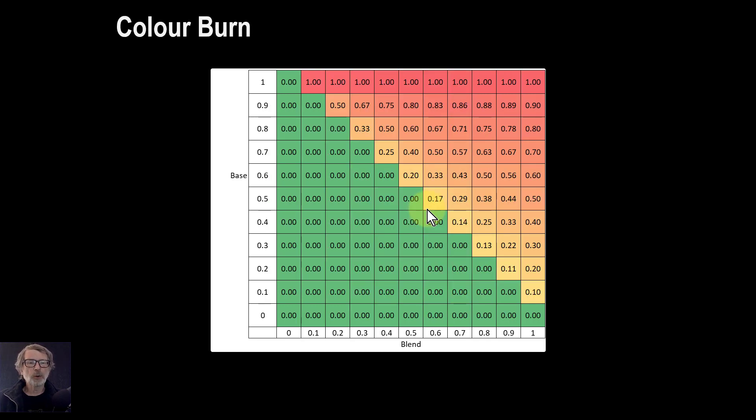Colour burn, now this gets quite different. So you get this block here, this triangle here of all black. However, you get whites across the top here. And as you move up here, you get more of a progression and non-linear progression towards this.